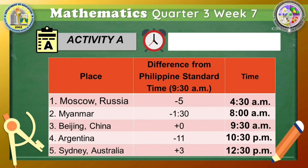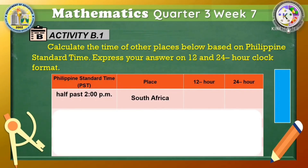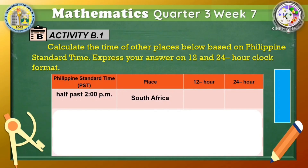We may now proceed to our next activity. For Activity B, calculate the time of other places below based on the given Philippine Standard Time. Express your answer in 12-hour and 24-hour clock format. I will give you an example and you will finish the rest. The given Philippine Standard Time is half past 2 PM. What time is it in South Africa? Since the PST is not directly specified, you need to know what half past 2 PM means. Past means after and half means half an hour, that is 30 minutes. Therefore, half past 2 PM is 2:30 PM.